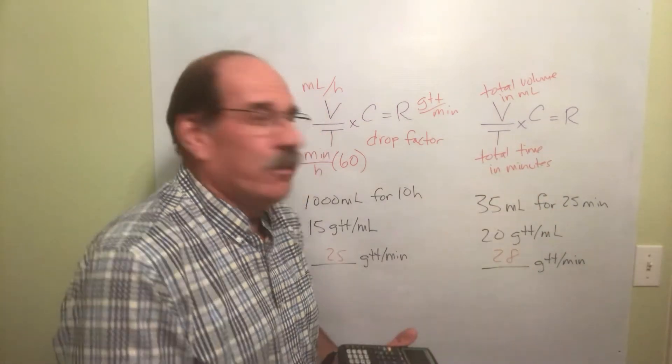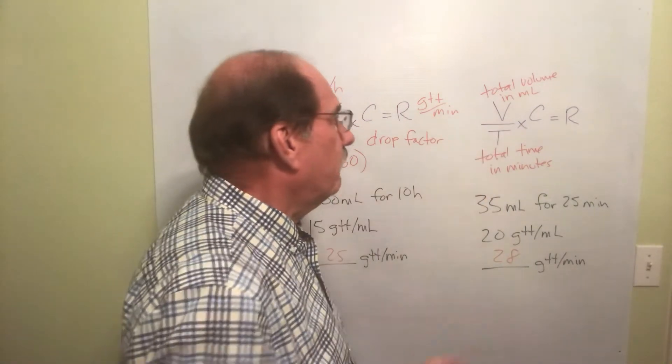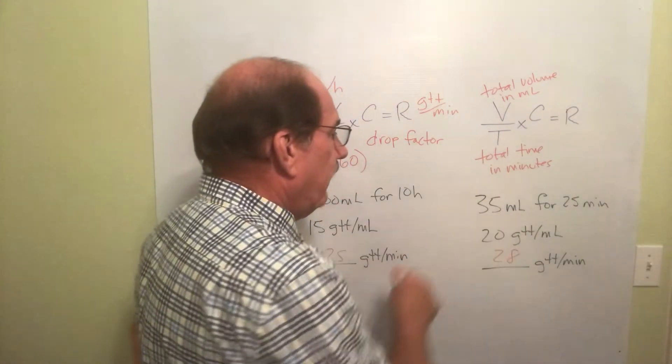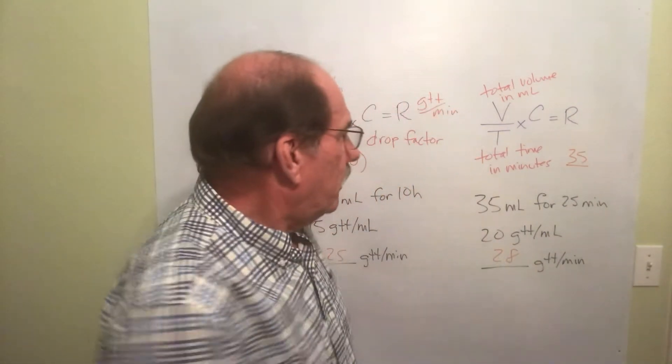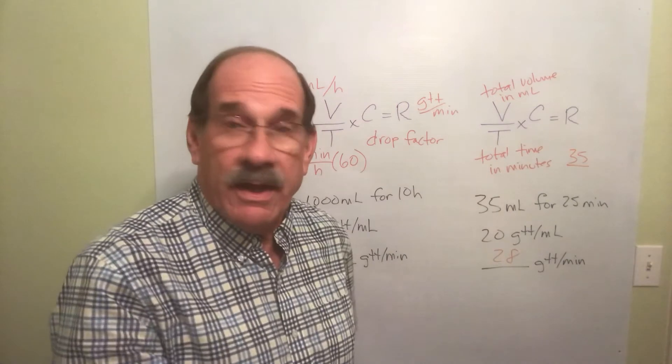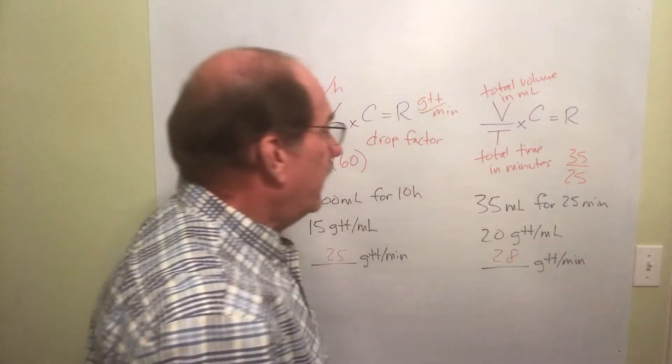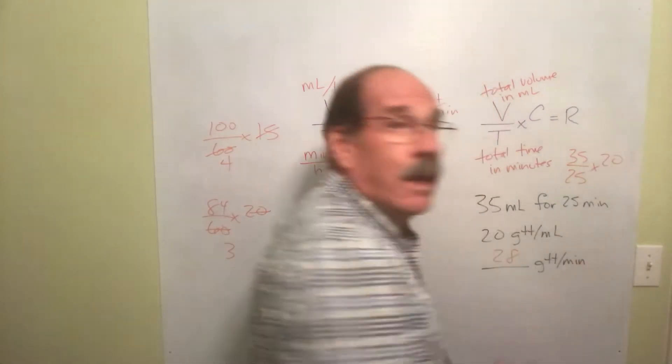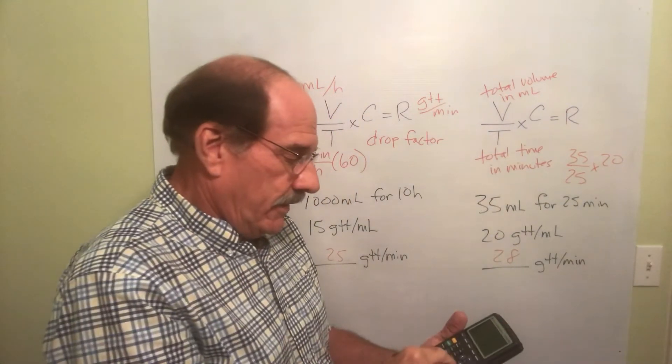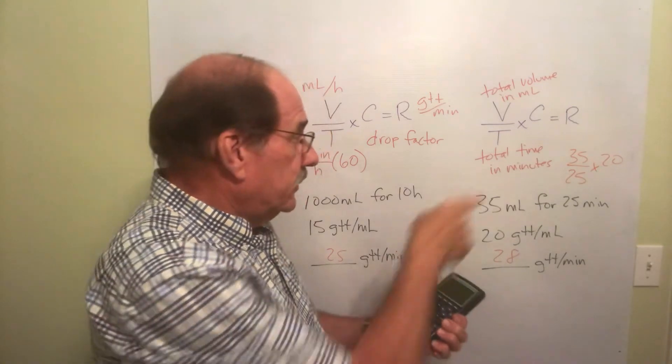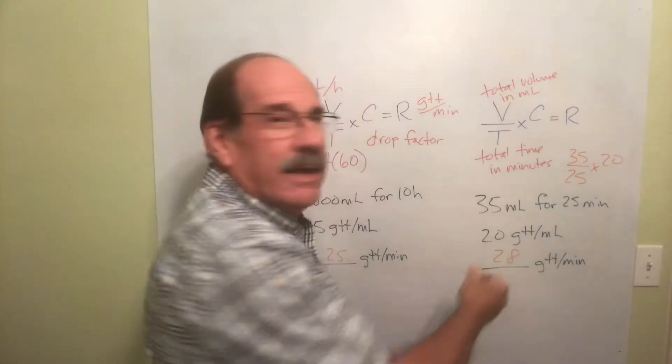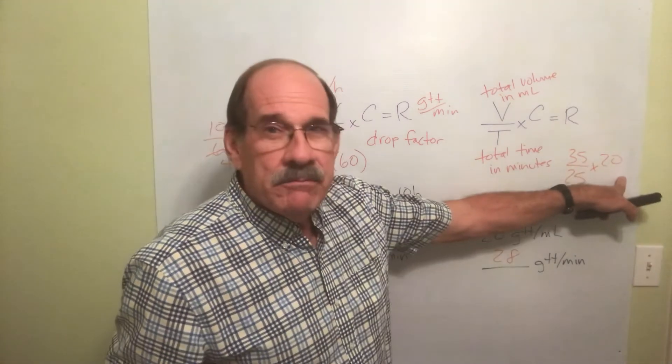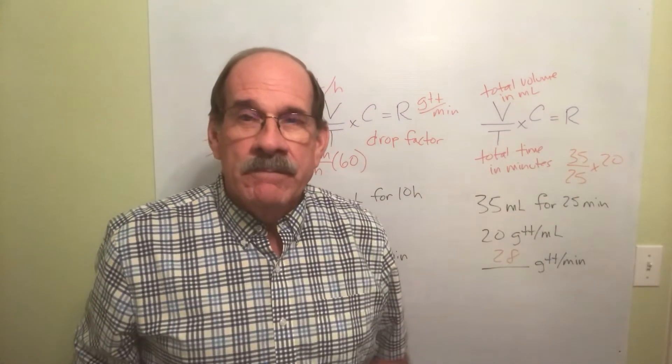Let's see what we do here. This is so great. What's the total volume in milliliters? 35. What's the total time in minutes? 25. And now C, what's the drop factor? 20, that's always given to you. Now all I do is 35 divided by 25 times 20. The answer is 28. Now wasn't that quicker? You could have done 35 times 20 divided by 25, either one is fine. But that's much quicker because you're eliminating some steps.